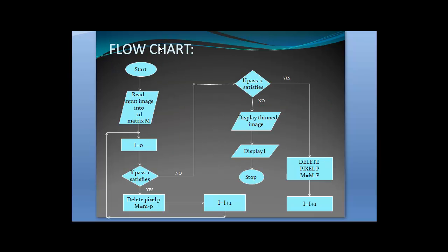This is the flowchart used. It starts here, reads an input image into a 2D matrix. I equal to 0 is the pixel considered. It checks for the pass1 condition. If it satisfies the pass1 rule, it deletes the pixel and moves to the next pixel, repeating the procedure.